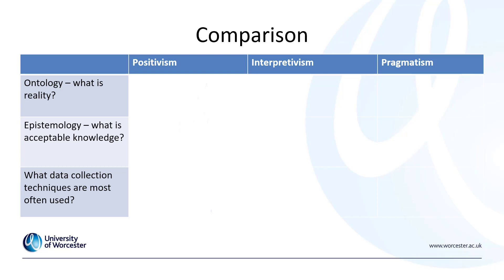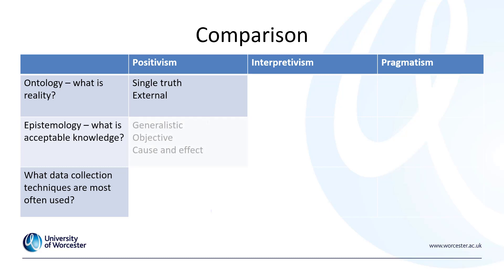Starting with positivism, it assumes about the nature of reality that there is a single truth, and as a researcher it is our job to find out that single truth that exists. It believes reality is external from us. When it comes to epistemology, positivism is generalistic — it is looking for information that could be generalized.